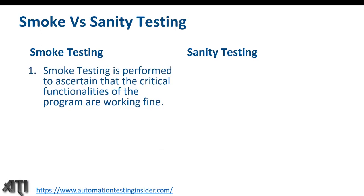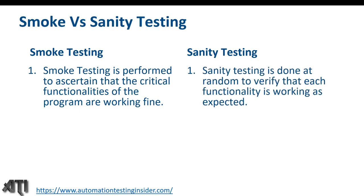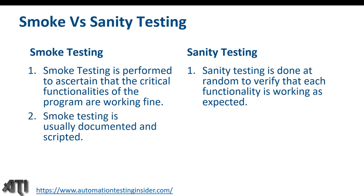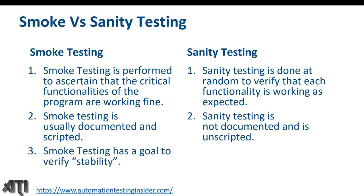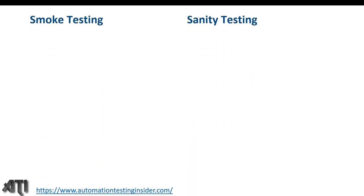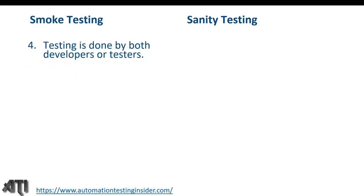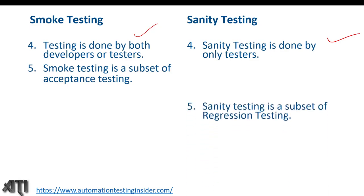Differences between smoke and sanity testing: smoke testing verifies that critical functionalities of the program are working; sanity testing is done randomly to verify each functionality is working as expected, since it's unscripted. Smoke testing is usually documented and scripted; sanity testing is not documented and not scripted. Smoke testing has the goal of verifying stability; sanity testing has the goal of verifying rationality or quality of the software.